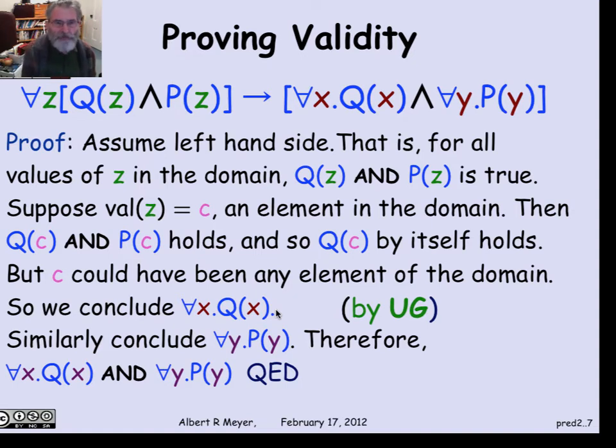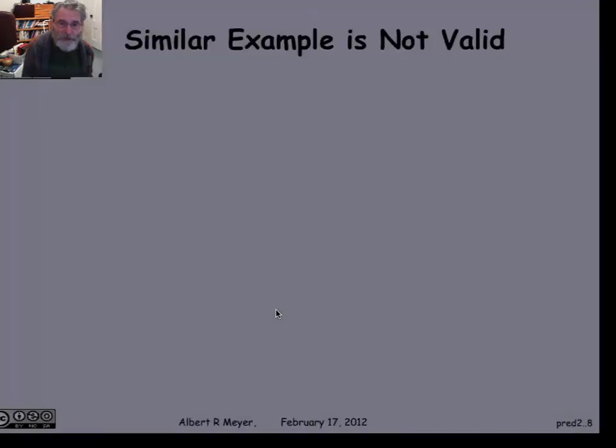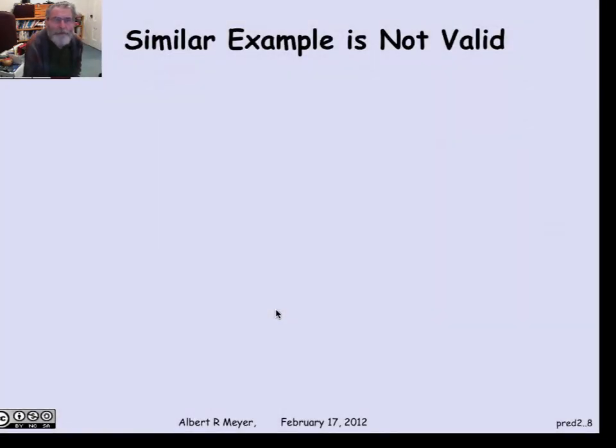There is a way to formalize all of this. And if you do, this argument that I've gone through is, in fact, very close to what the rules of formal proof would require. But we're not going to actually try to do that. But I will talk about the rule of universal generalization in a minute. But before we do that, let's look at an example, which you also need to be able to cope with, where a formula is not valid.